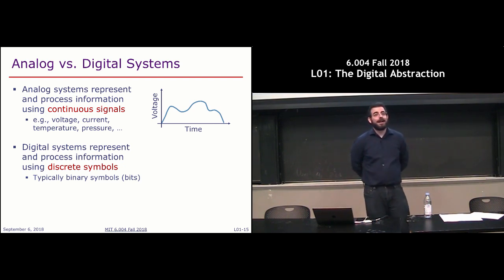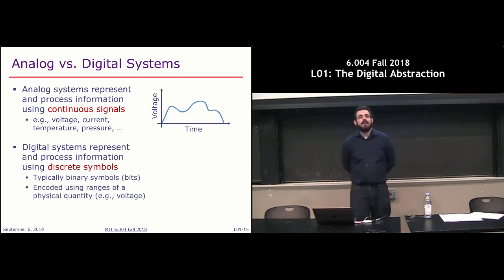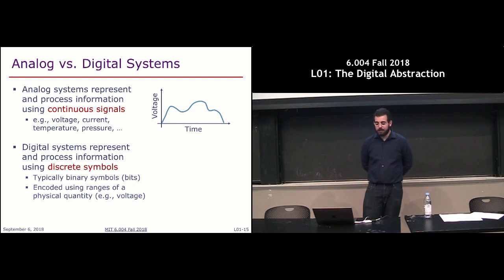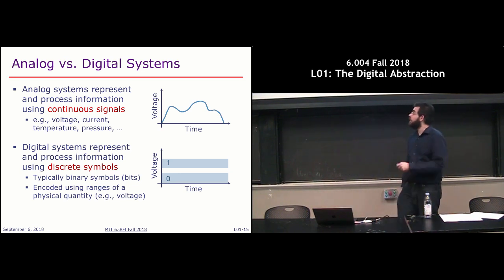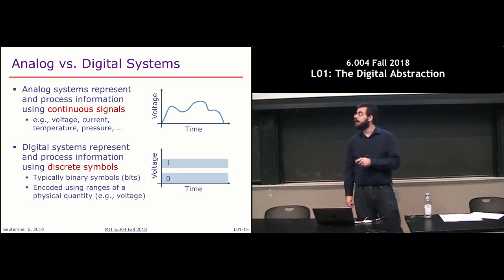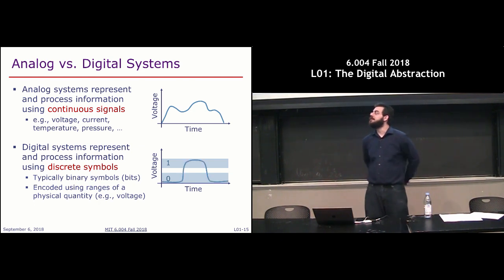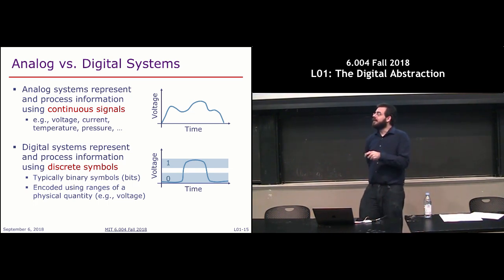Because we live in an analog world, we actually need to engineer these systems to encode discrete symbols using ranges of values from a physical analog quantity. For example, you can have a voltage waveform over time where you say these two ranges correspond to a valid digital one and a valid digital zero, and you can interpret a waveform as zero, one, zero.